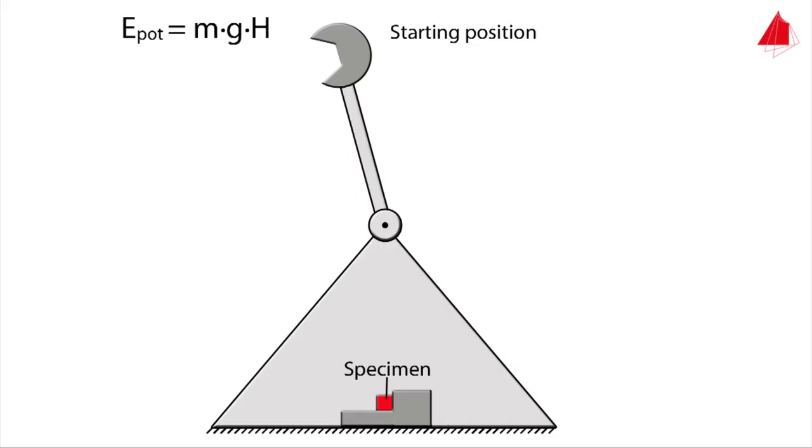Here is the main principle of the measurement. In its starting position the pendulum only has potential energy. It is given by mass of the hammer m times gravitational acceleration g times starting height capital H.